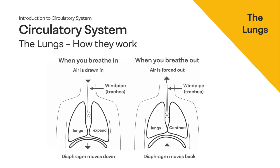Your main breathing muscle is the diaphragm. You can see it sits at the bottom of your lungs, dividing your chest from your abdomen. Your diaphragm contracts when you breathe in, pulling the lungs down and stretching and expanding them. It then relaxes into a dome position when you breathe out, reducing the amount of air in your lungs.